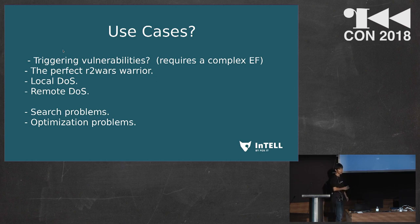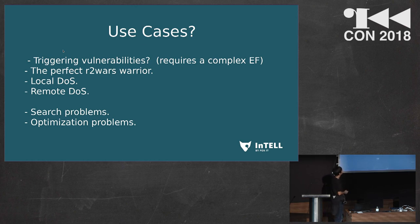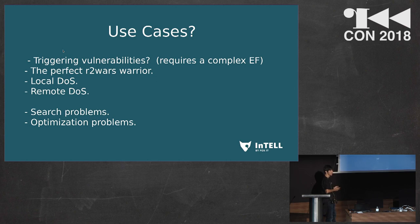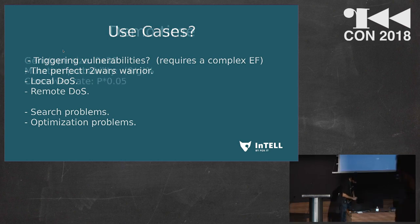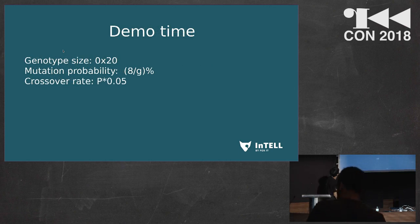For Core Wars, I did some calculations and in one year of computation on one PC it could generate the perfect warrior — it would be funny, humans versus artificial intelligence. Local DOS is what I was also trying: generating assembly code that consumes all system resources, evolving to maximize system resource usage. Remote DOS is similar but instead of mutating code you mutate network packets, install a sensor in the remote host, and evaluate using the host's resources.